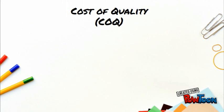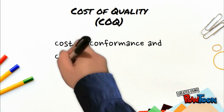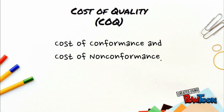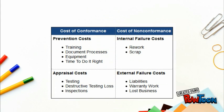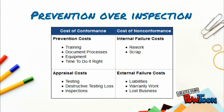The cost of quality includes money spent during the project to avoid failures and money spent during and after the project because of failures. These are known as the cost of conformance and the cost of non-conformance. The cost of preventing mistakes is usually much less than the cost of correcting them — this key quality concept is called prevention over inspection.